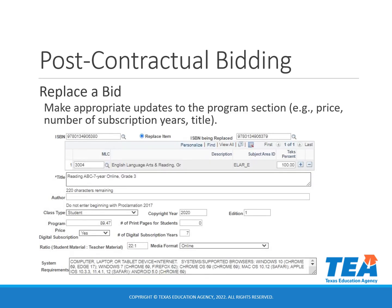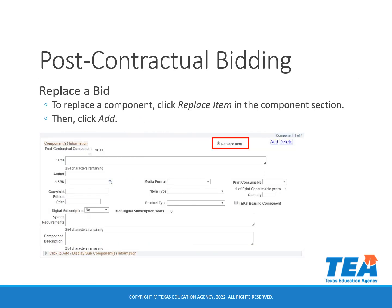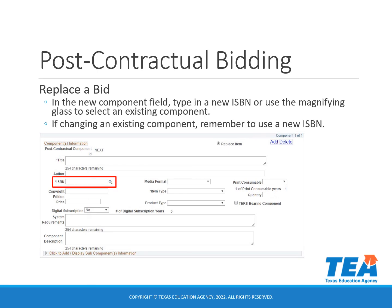You will make the appropriate updates to the program section — changing the price, the number of subscription years, the title, and any other changes needed. To replace a component, you will click replace item in the component section, then click add. In the new component field, type in the new ISBN or use the magnifying glass to select an existing component. If you're changing an existing component from one specific number of years to fewer years, remember to use a new ISBN. If your component already has through school year in the title, you can go to the post-contractual item update link to update the price or the number of subscription years for that existing component.